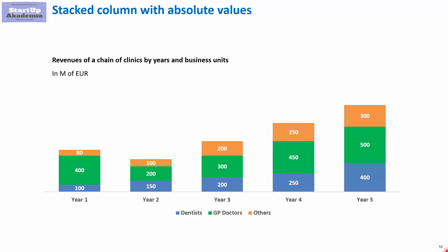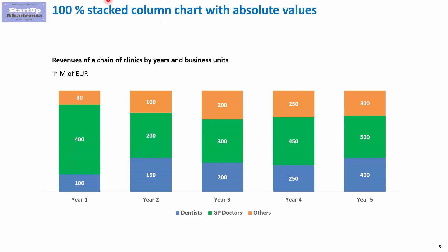If you want to present the change of the structure of the business, you could use a different type of column chart — the so-called 100% stacked column chart. Here we have the option of absolute values, and also another option with percentages. This sort of chart is used when you want to concentrate on the behavior over time of the structure — in other words, what is the importance of each component. Here you can see very clearly that, for example, the GP doctor importance is going down, which you can observe in either absolute values or percentages.